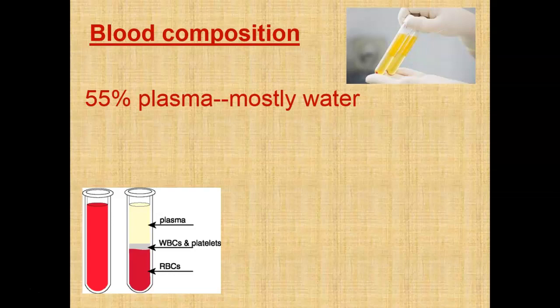About 55% of any volume of blood is plasma. Plasma is the straw-colored liquid that our blood cells are suspended in; it's mostly made up of water. In that plasma you have different proteins floating in it. Blood's job is to transport things throughout the body, so hormones, ions, nutrients, and waste products are all carried in our blood.